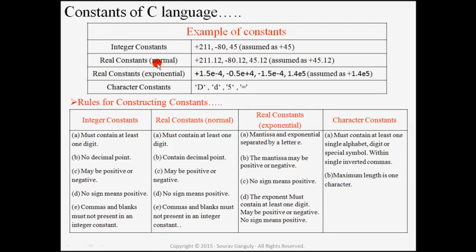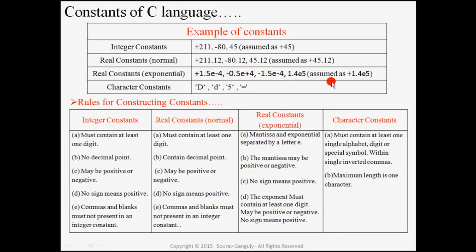Now come to the real constant, which has two types. First is normal case and second is exponential case. In normal case, the value contains a decimal point and no E. For example, 45.12 is a real constant. Minus 80.12 and plus 211.12 are also real constants. In the exponential form, E will be present — for example, minus 0.5E+4 is a real constant of exponential type. If no sign is present, we assume it is plus.